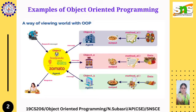Programming languages designed primarily for OOP include Java, Python, and C++. Other programming languages that pair with OOP include Visual Basic .NET, PHP, and JavaScript.